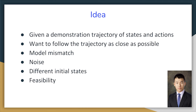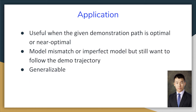Here's the idea. We are given a demonstration trajectory of states and actions of a rocket landing, and we want to follow the trajectory as close as possible. There might be some model mismatch and noise in the model, and we might also have different initial states and feasibility issues. The application of our ideas is that it's going to be very useful when the given demonstration path is optimal or near optimal, which in our case is very optimal. Also, model mismatch or imperfect models will still be usable under our MPC algorithm.